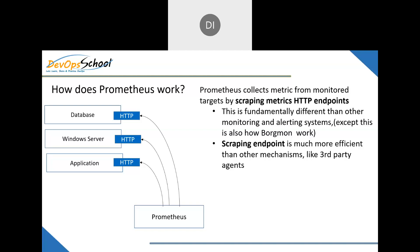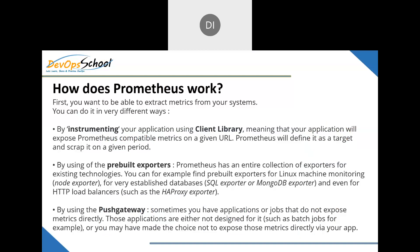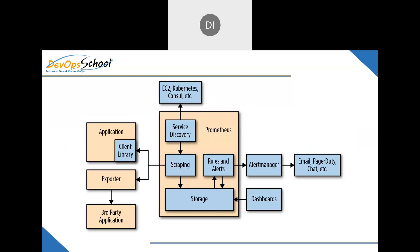In summary: Windows or Linux servers publish data at HTTP endpoints via exporters; applications publish data via client libraries; and Prometheus scrapes from those endpoints at the configured interval — this is the pull-based mechanism. Internally, Prometheus has service discovery, storage, rules, and scraping components. You write rules and alerts which trigger the alert manager, which then sends email, PagerDuty, or other notifications. You can use Grafana as your dashboard.